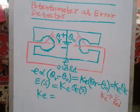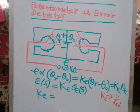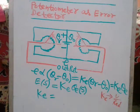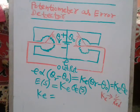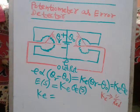The magnitude of the desired output is constant — it is the input and is called the reference, denoted by theta_r. To control the position of the shaft, the error must be determined. This error is the angular difference between the position of the input reference shaft and the output shaft.